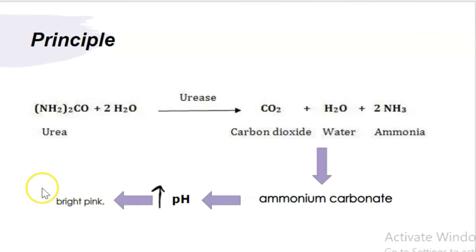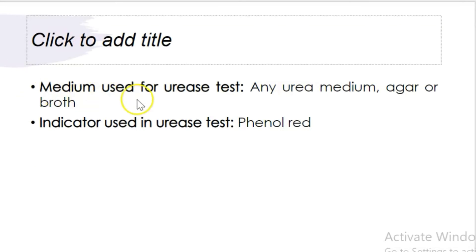That's why you see the bright pink color in the results. The medium used in urease test is any urea medium, agar or broth, and the indicator used is phenol red. Phenol red turns bright pink when the medium is basic or alkaline.